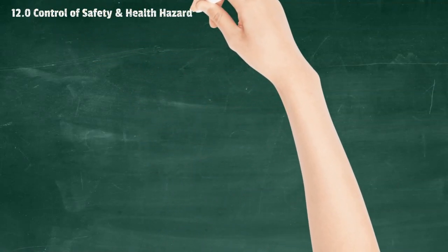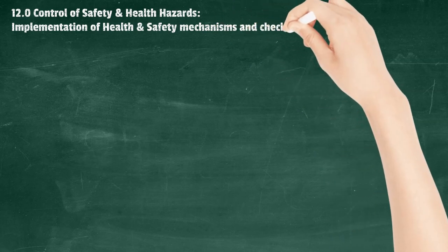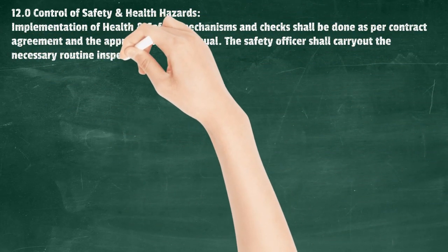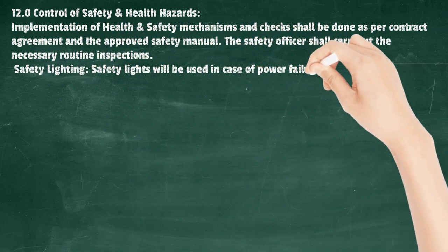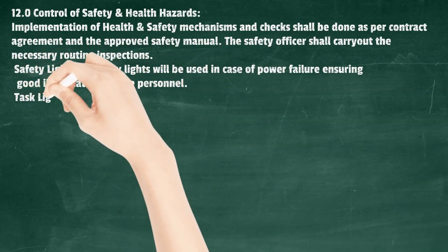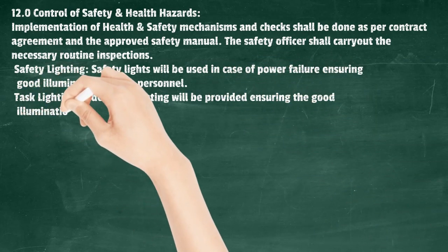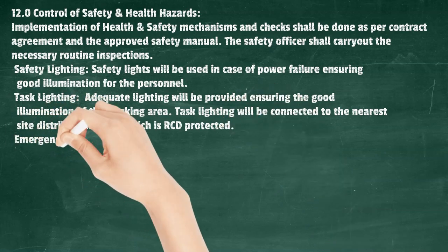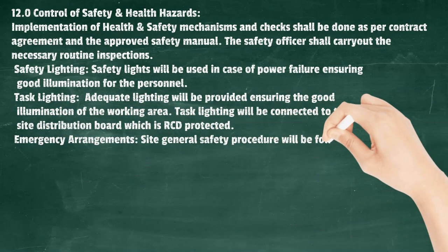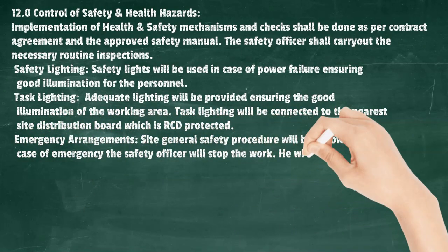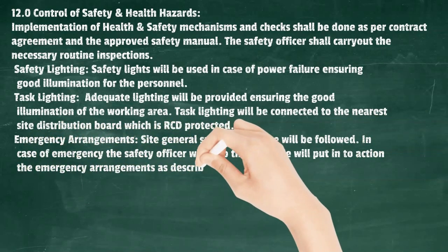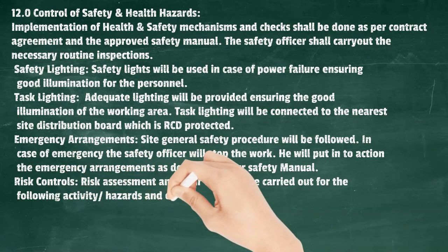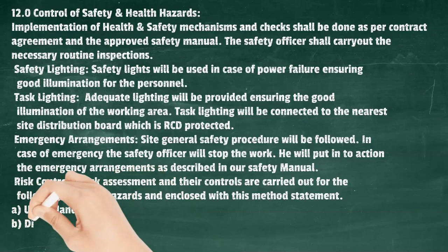Control of Safety and Health Hazards: Implementation of health and safety mechanisms and checks shall be done as per the contract agreement and approved safety manual. The safety officer shall carry out routine inspections. Safety lights will be used in case of power failure. Adequate task lighting will be provided and connected to the nearest site distribution board, which is RCD protected. In case of emergency, the safety officer will stop work and put into action the emergency arrangements as described in the safety manual. Risk assessment and controls are enclosed with this method statement, covering: using hand tools and disposal of waste materials.